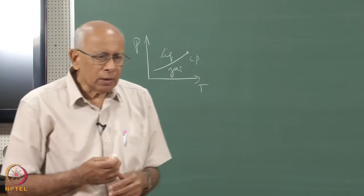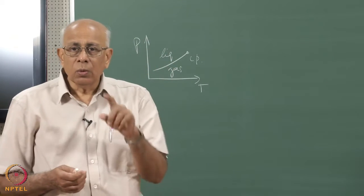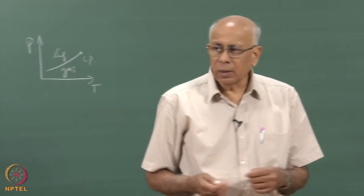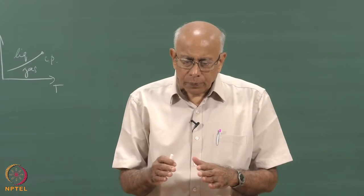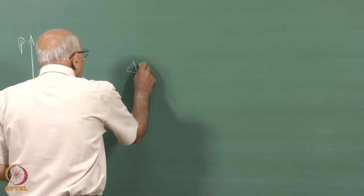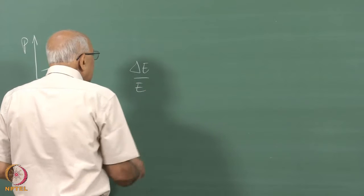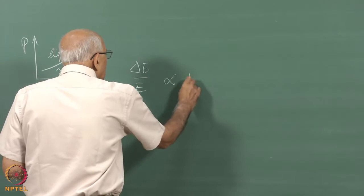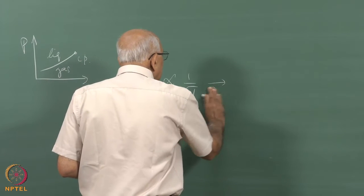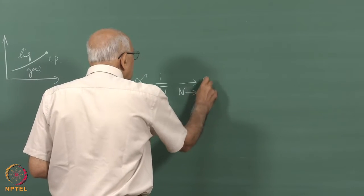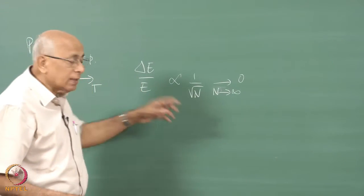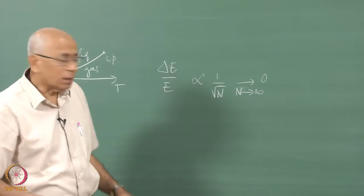As we know, thermodynamics deals with average quantities assuming that the fluctuations about this average are very, very small — typically 1 over the square root of the number of particles. That fails once you get to the critical point. Normally δE/E is proportional to 1/√N, which tends to 0 as N tends to infinity. But we will see now how this breaks down at the critical point.